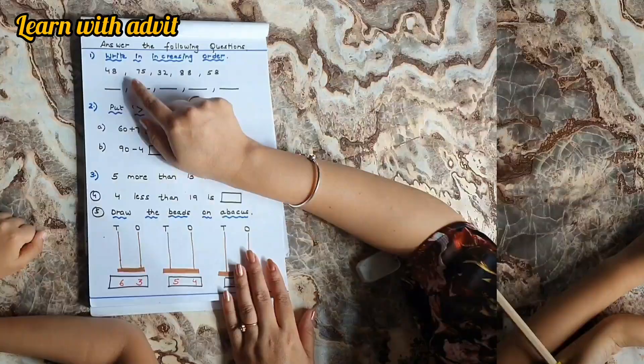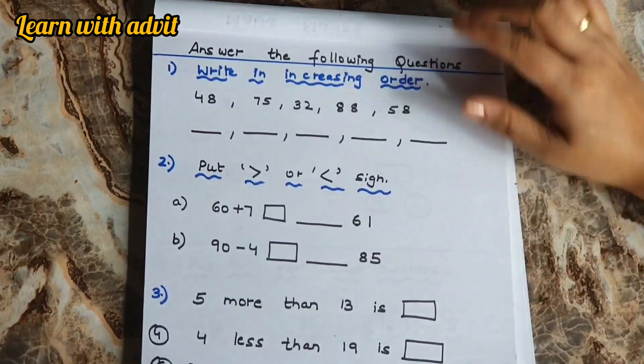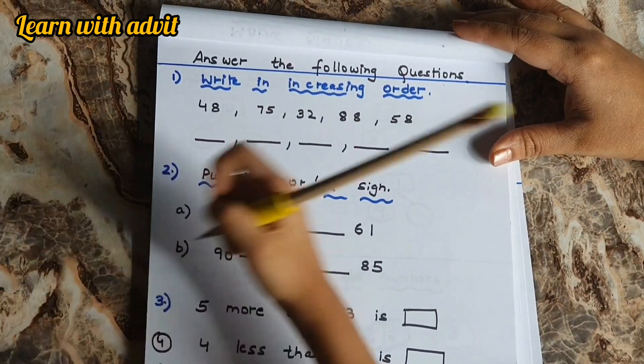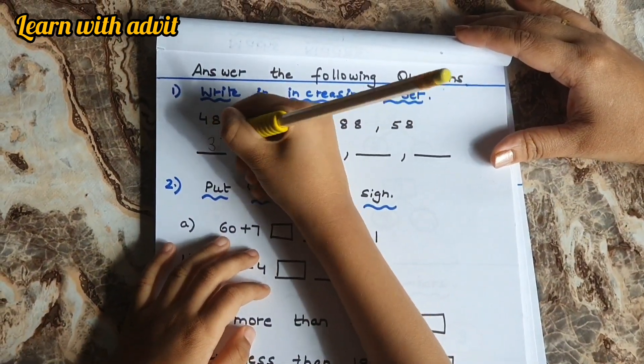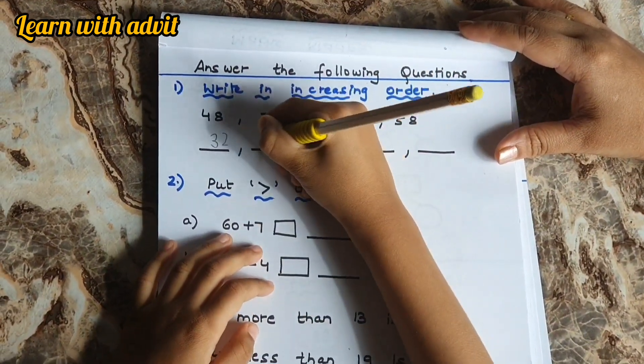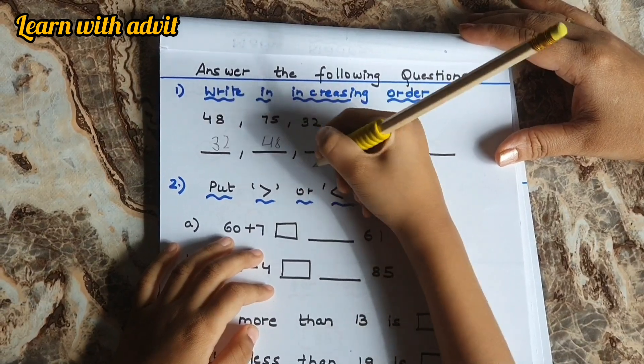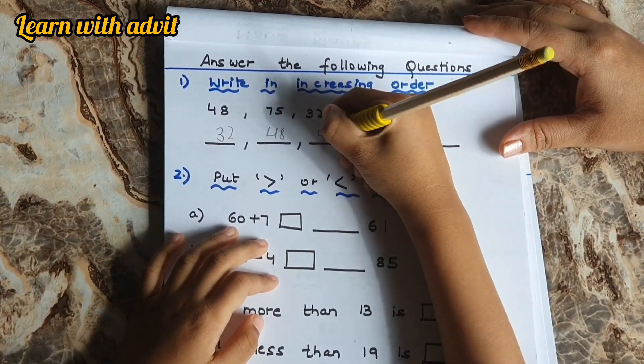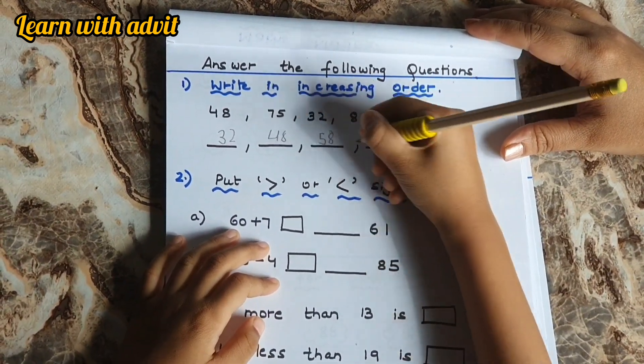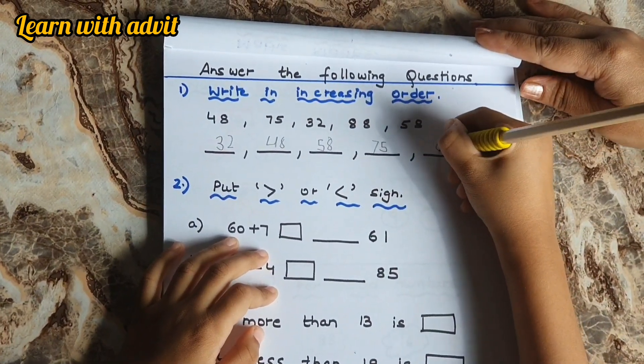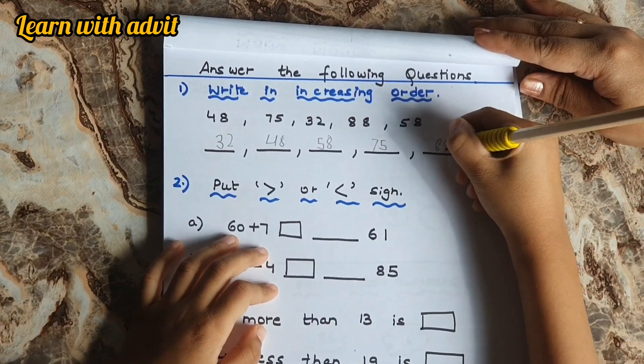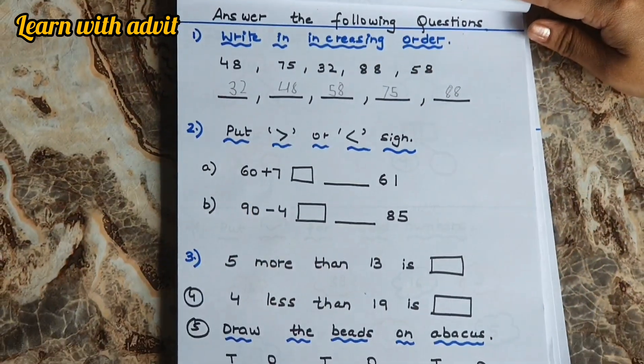Write in increasing order. Do it. Increasing order: 32, 48, 58, 75, 88. Very good.